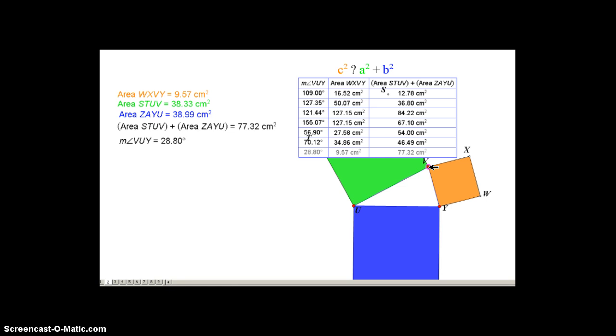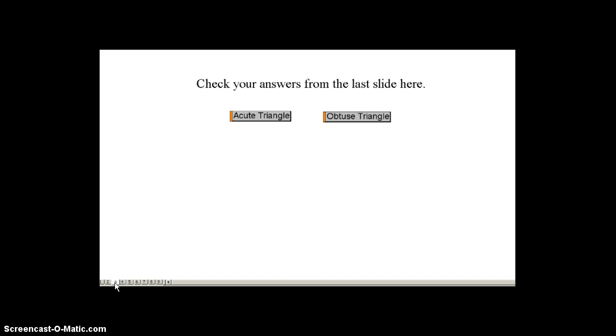So if we can calculate C squared and compare it to the sums of A squared plus B squared, we can classify the triangle as acute or obtuse. If C squared is equal to A squared plus B squared, then I know I have a right triangle because it satisfies Pythagorean theorem. If, however, C squared is smaller, then I have an acute, and if C squared is larger, I have an obtuse.